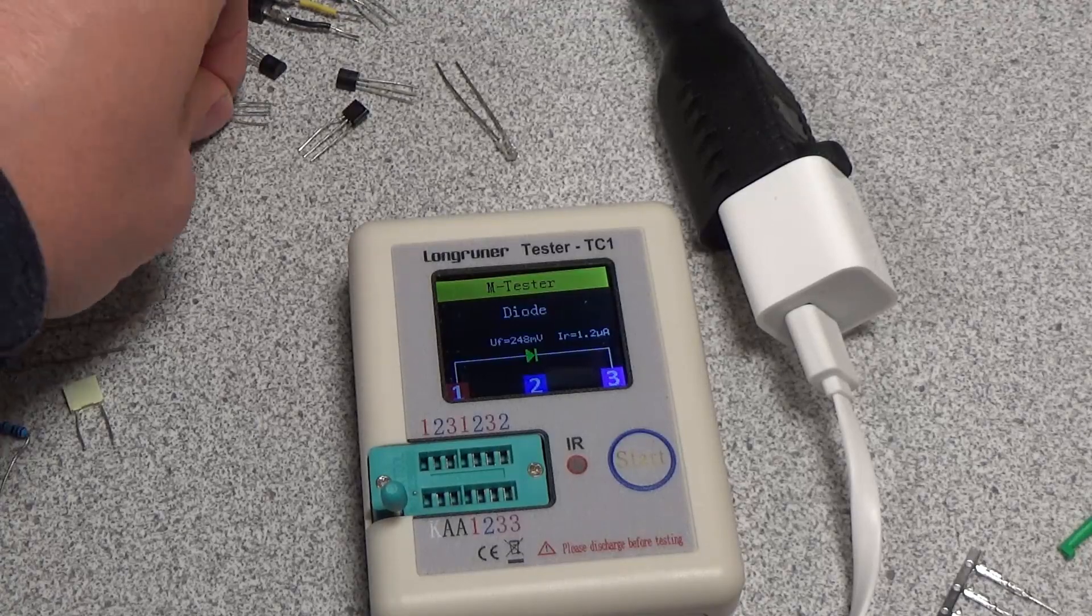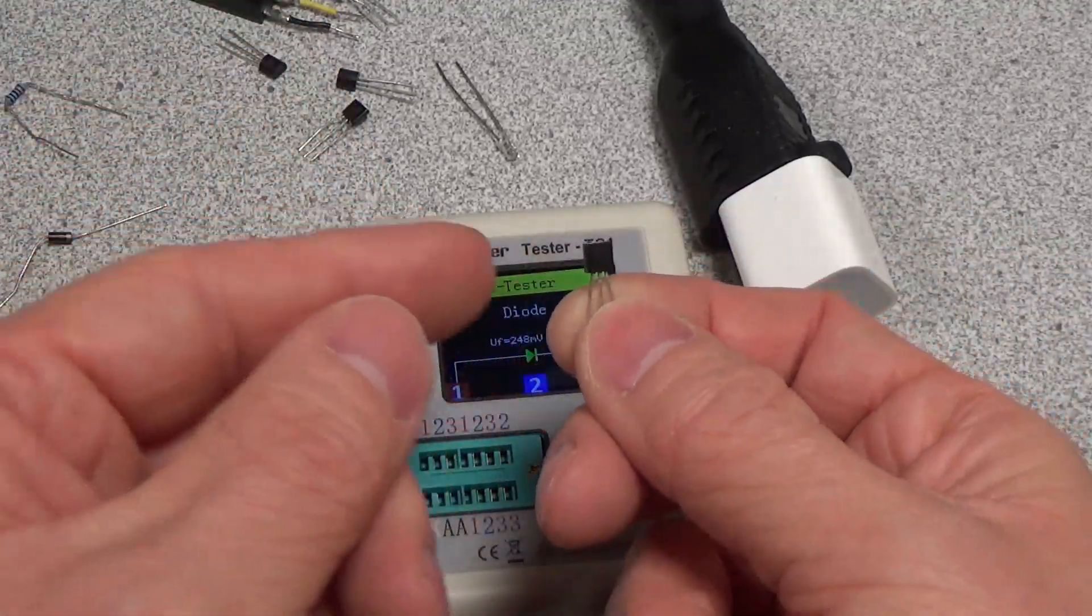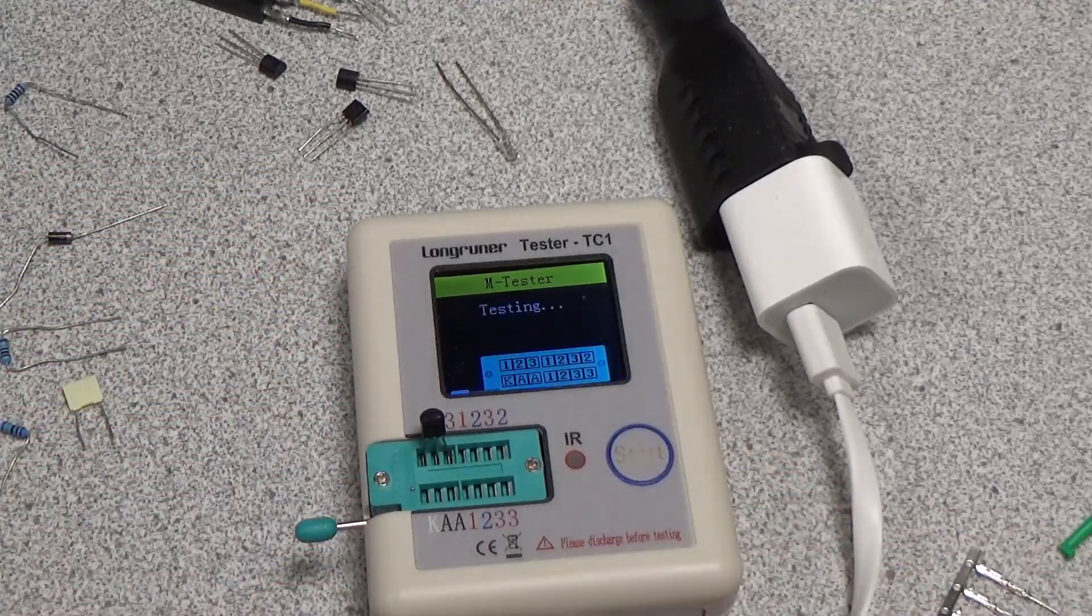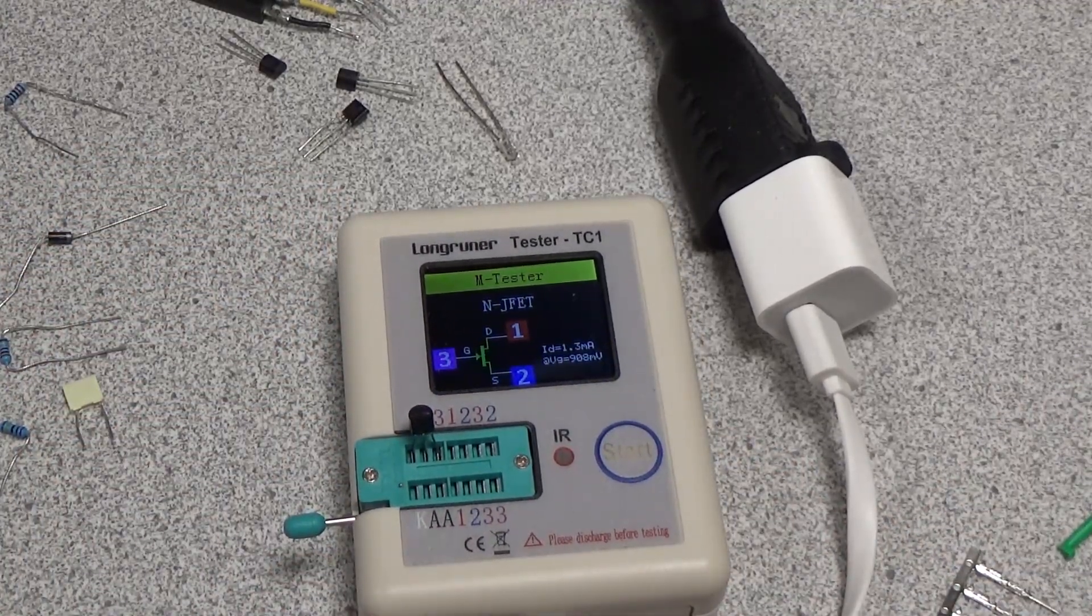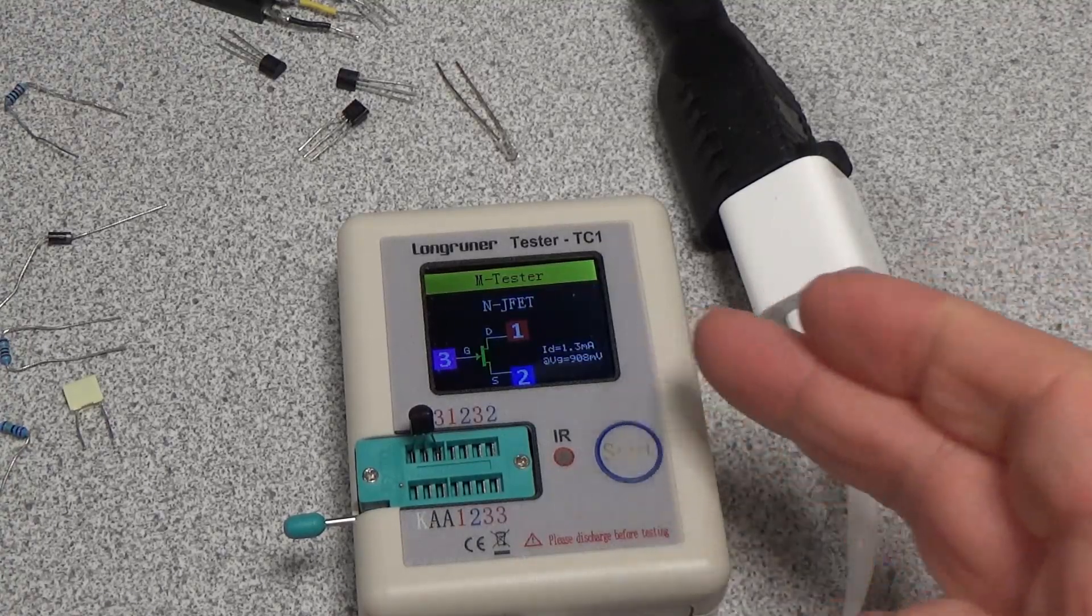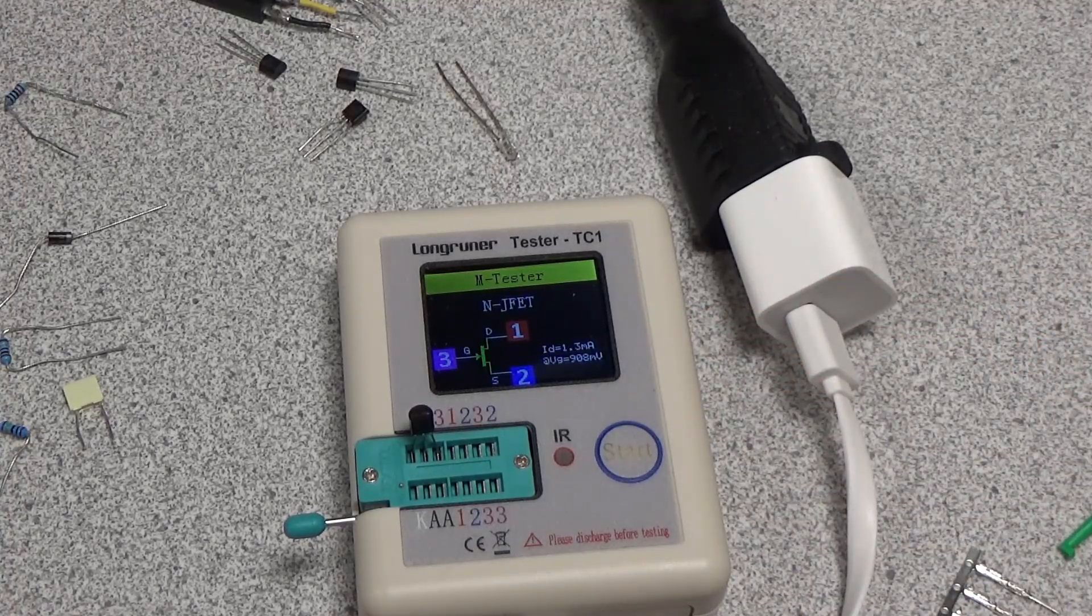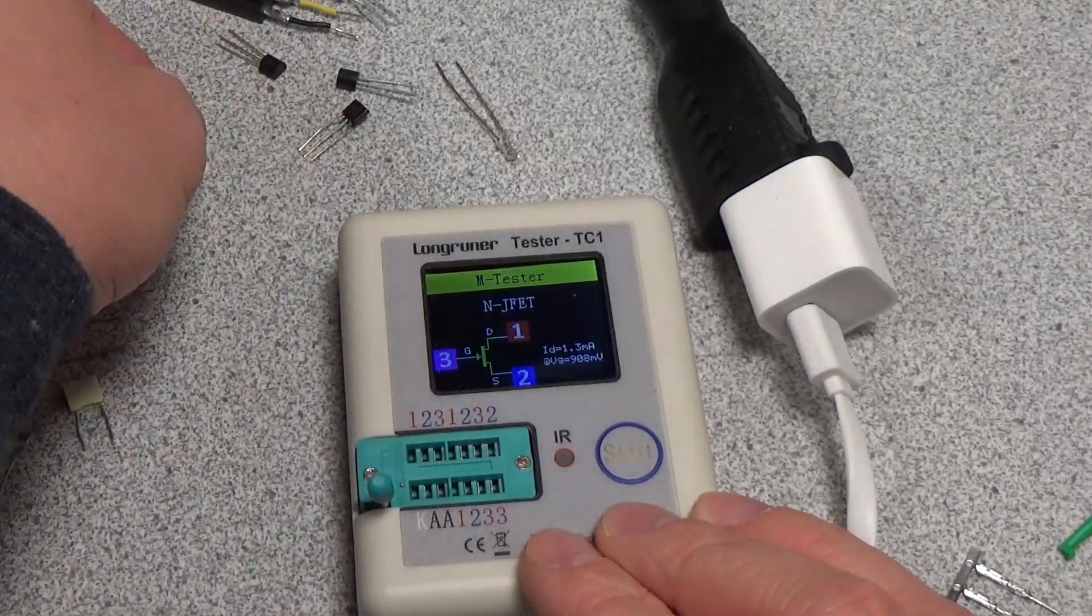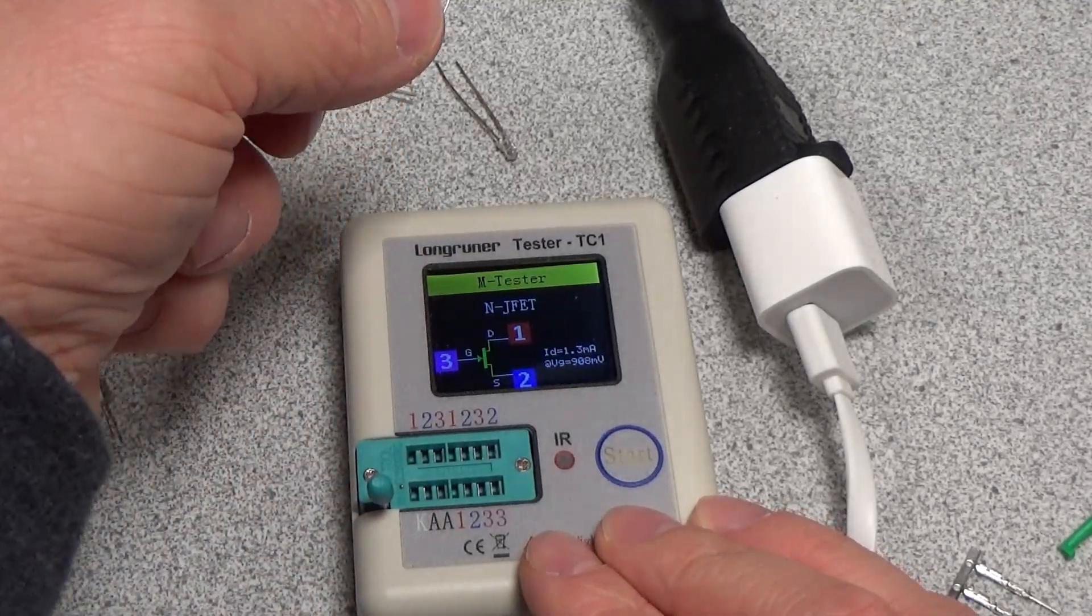And let's try some more difficult components. So this is a JFET, I believe this is an N-channel JFET. Let's see what it comes up. Almost instantaneously came up with an N-channel JFET as the gate voltage there. That was almost instant. That's really good.